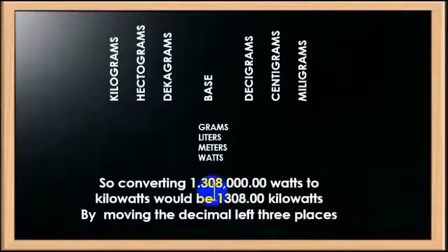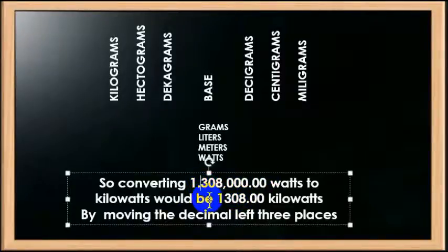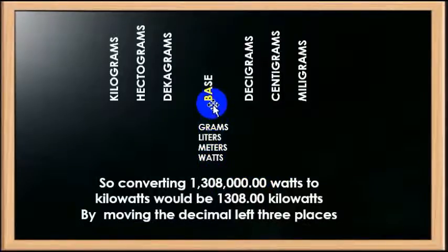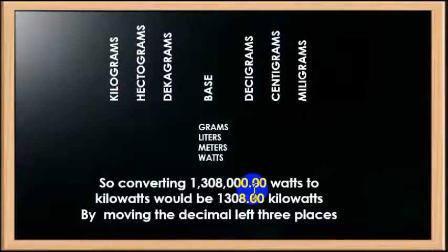Because with our answer, we came up with one million, that should be a comma. One million, three hundred and eight thousand, zero zero zero point zero zero. So, since our answer came out in watts, we need to change it into kilowatts. And that's what the base here represents. So, wherever our decimal is, if we're going from watts to kilowatts, in this example, then the decimal point needs to move over one, two, three times.